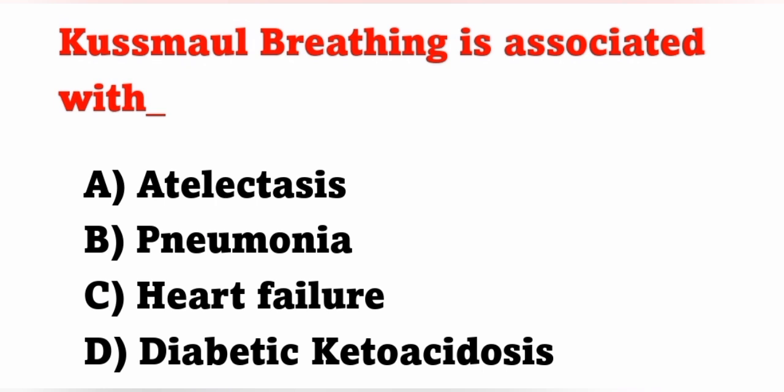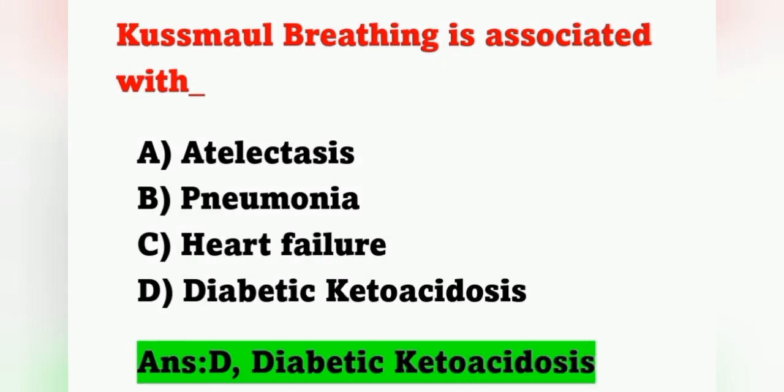Next question: Kussmaul breathing is associated with — options: A) atelectasis, B) pneumonia, C) heart failure, D) diabetic ketoacidosis. Kussmaul respiration is deep, repetitive, gasping-like respiration seen in diabetic ketoacidosis. Option D is the correct answer.